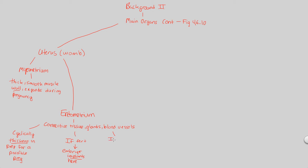What if there's no fertilization? Usually, there is no fertilization — that's the norm. If there's no fertilization, you have this thickened tissue with no pregnancy. This thickening was all in preparation, just in case. But if pregnancy doesn't happen, the thickened tissue is sloughed off. This process of sloughing off the thickened tissue is referred to as menstruation, which we'll look at in much greater detail later in this lecture. That covers the uterus.